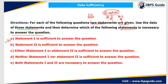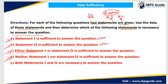I will choose option A only if statement 1 alone is sufficient. I will choose option B if statement 2 alone is sufficient. I will choose option C if either statement 1 or statement 2 alone is sufficient to answer the question — that is, both statements are individually sufficient. I will choose option D if neither statement 1 nor statement 2 is sufficient to answer the question — that is, none of the statements alone can answer the question.